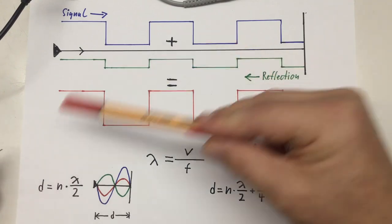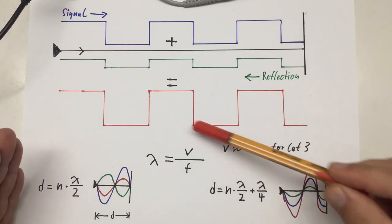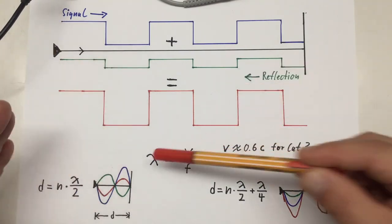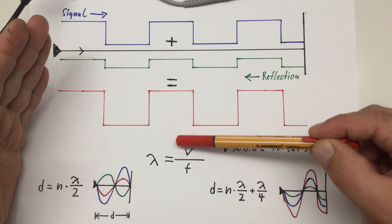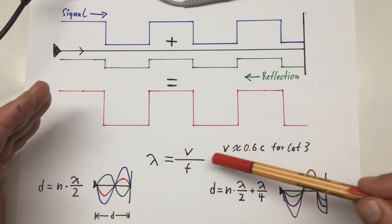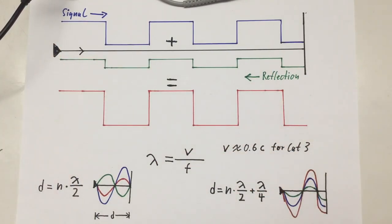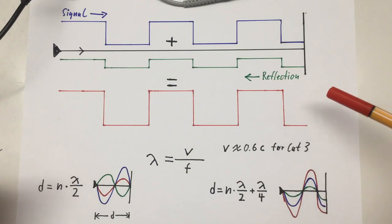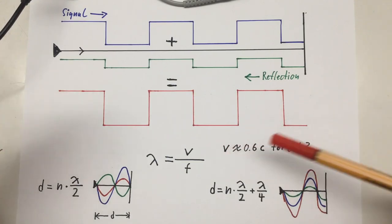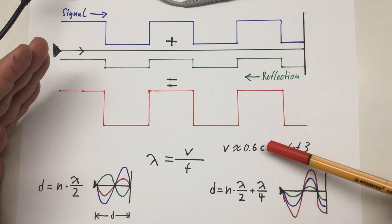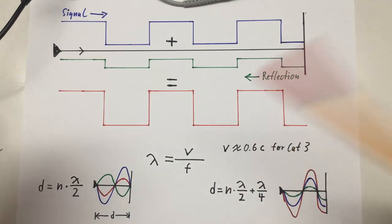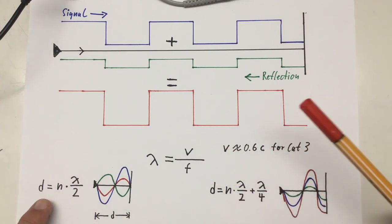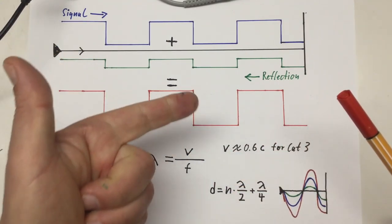Because this is one of my dreaded tutorials, I'll treat you to a little bit of math too. I assume you know this relationship: lambda, the wavelength, is equal to the velocity of the signal over its frequency. For a Cat 3 cable, the velocity of the electromagnetic signal on it is about 0.6 the speed of light in vacuum.